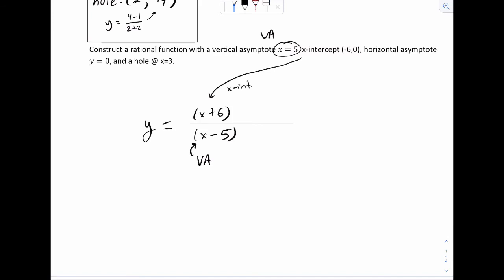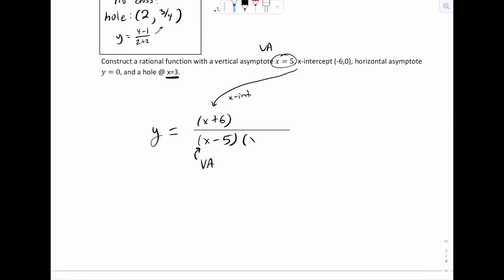Now it says there's a horizontal asymptote y equals 0 and a hole at x equals 3. So what we just learned is the only way to create a hole is to have something cancel out. So that would mean there must be an x minus 3 on the top and the bottom. So right here, that would create a hole. And the only piece I haven't figured out quite yet is this. The HA is y equals 0.